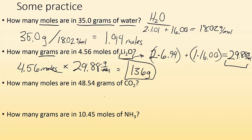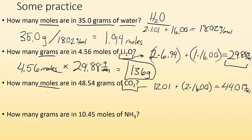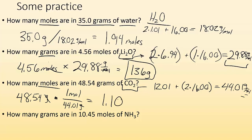How many moles are in 48.54 grams of CO2? Find the molar mass of CO2: carbon is 12.01 plus 2 times 16.00 for the oxygens, giving 44.01 grams per mole. They want moles, so I set up 48.54 grams times 1 mole over 44.01 grams. Grams cancel out, and I get 1.103 moles. The only unit left is moles.